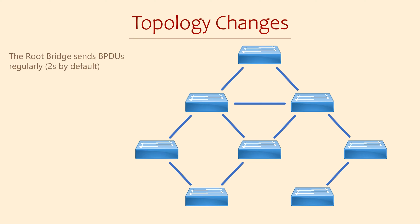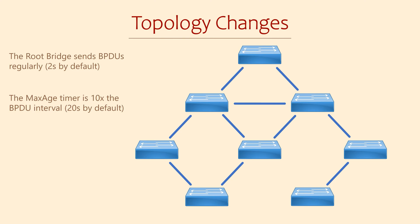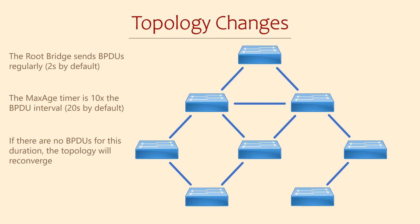One way it can determine that something has changed is if it doesn't receive the BPDUs when it expects to. Each switch has a timer called the max age timer. This is 10 times the interval at which BPDUs are sent. By default, BPDUs are sent every 2 seconds, so the default max age timer is 20 seconds. If BPDUs are missing on an interface for the duration of the max age timer, then the switch knows that there is a problem and it will need to adjust the topology.